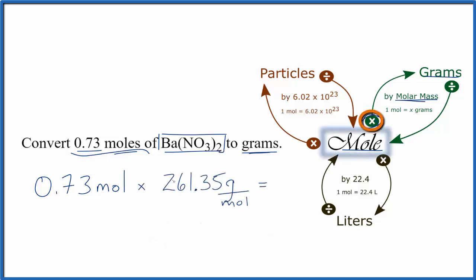So when we multiply the moles by the grams, we have moles on top and the bottom here, so we're going to be left with grams. And that gives us 190.79 grams of barium nitrate.